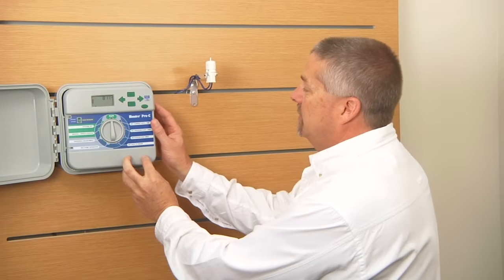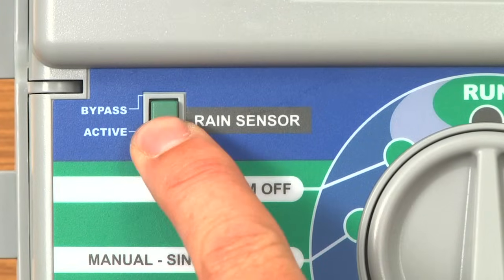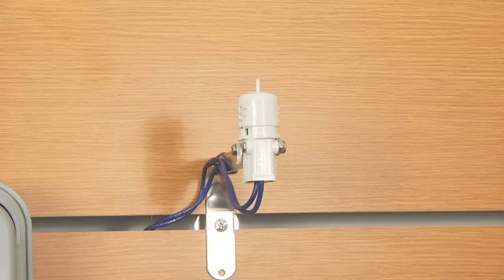It's very important if you want to utilize the rain sensor to have the rain sensor switch in the active position. If you're in bypass, it will ignore any input from the rain sensor.